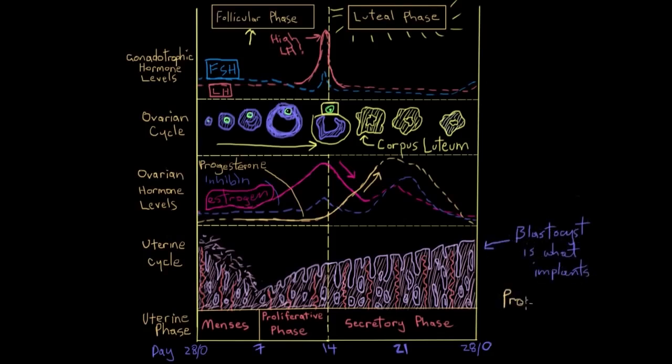In comes progesterone. Let's look at the word for a second. Pro meaning for and gest referring to gestation. This last part just clues you in that it's a hormone. So progesterone is a progestation hormone. It's what mainly stimulates the uterine lining to prepare for implantation and gestation during this phase called the secretory phase.